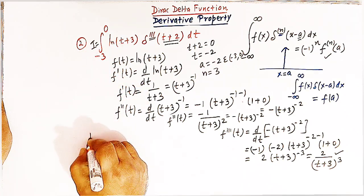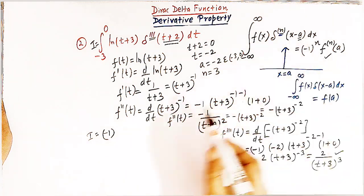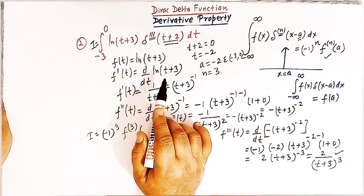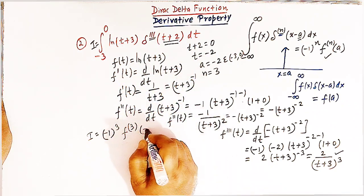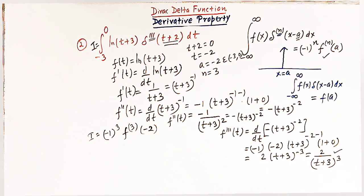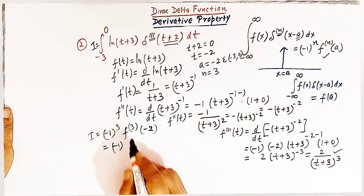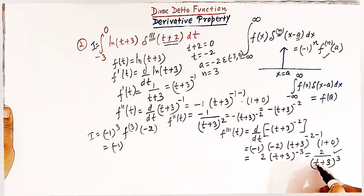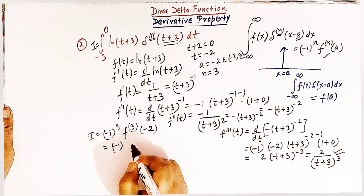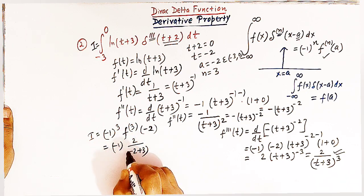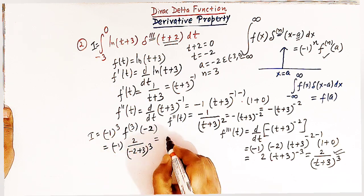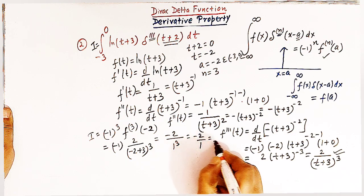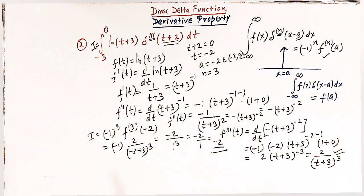The value of the integral I equals minus 1 raised to n, where n is 3, times the third derivative of f(t) evaluated at a equals minus 2. So minus 1 raised to 3 is minus 1. The third derivative evaluated at t = minus 2 gives 2/(minus 2 + 3)³ = 2/(1)³ = 2. Therefore I = minus 1 times 2 = minus 2. The value of this integral is minus 2.